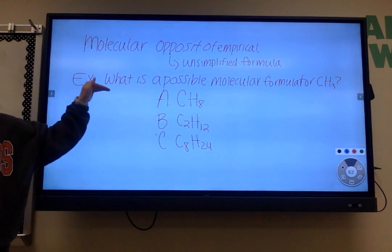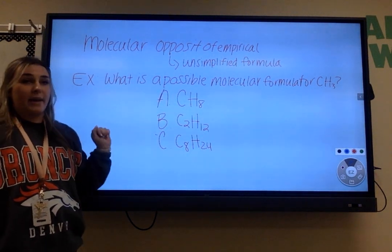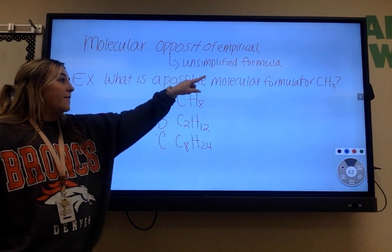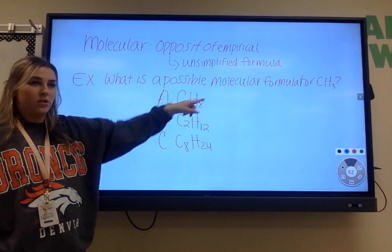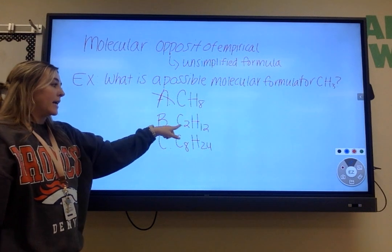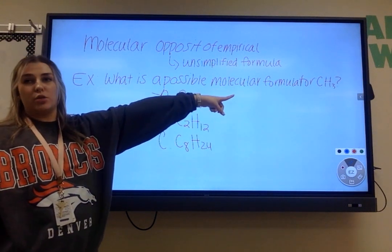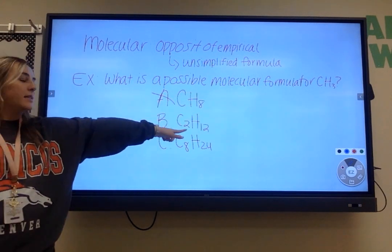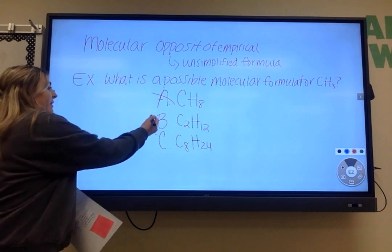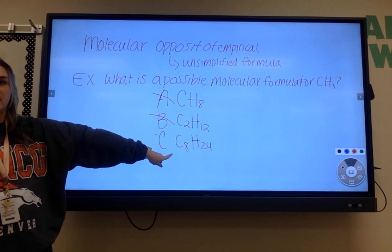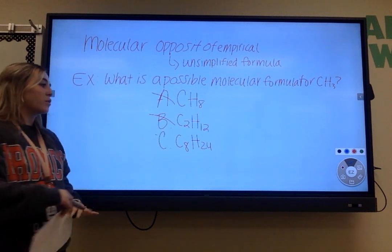If I look at my first one I see that C was not multiplied by anything, so that means if H wasn't multiplied by anything this should be three not eight. Do we see that? So I know that that is not my answer choice. If I look at B, what was C multiplied by? Two. So if H was multiplied by two what should my H have been? Six. This says 12 so I know that that's not correct. If I look at my last one it says C was multiplied by eight, so if H was multiplied by eight what should my H be? 24. So this would be my answer.